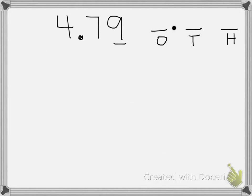So here we have the number 4 and 79 hundredths, and we want to know the value of the 9. If we think about that number in our place value chart, we have the ones, the tenths, and the hundredths. The 9 is in the hundredths place, so it has a value of 9 hundredths.